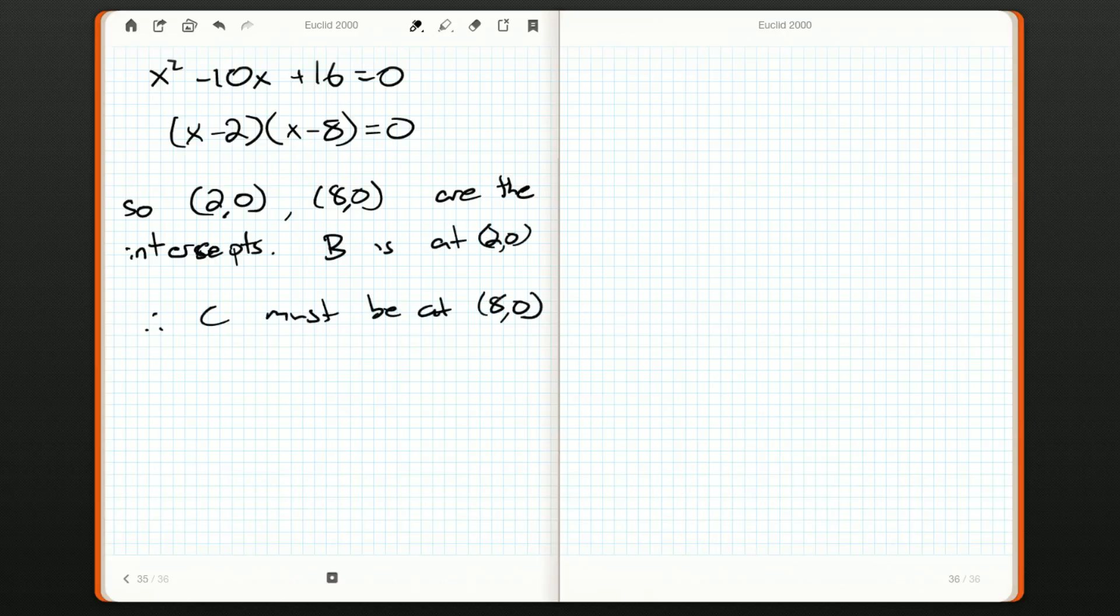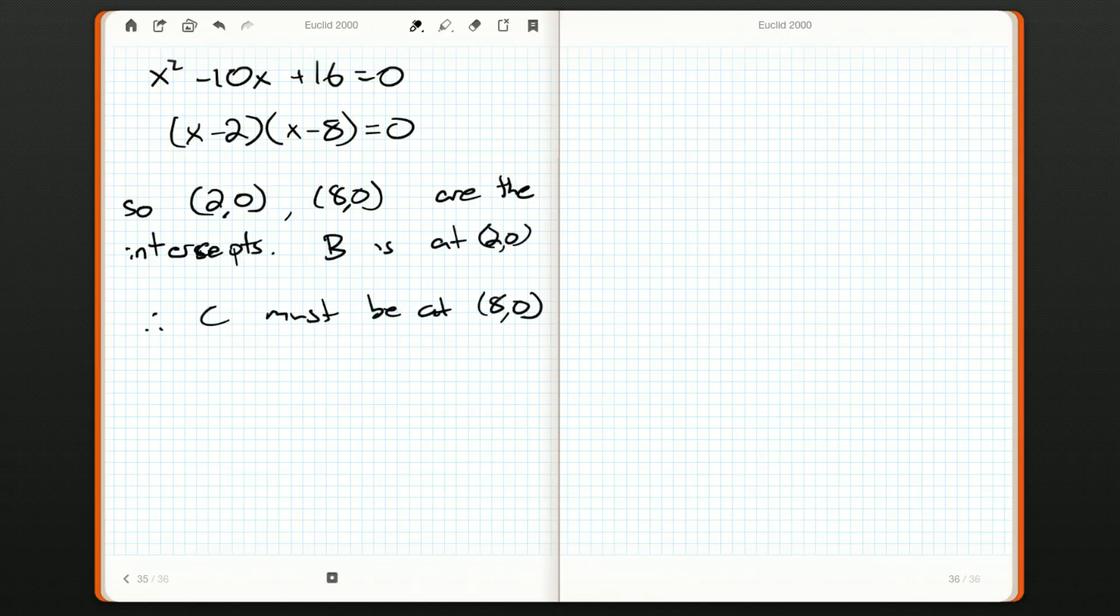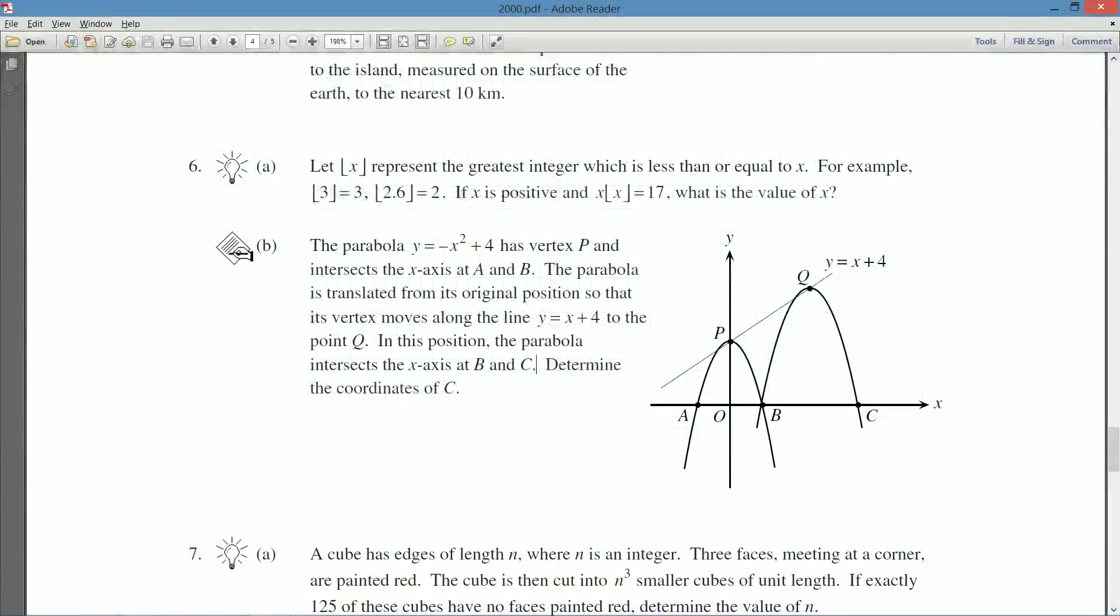And I think that's all we were asked for, is what are the coordinates of C? Determine the coordinates of C. Well, we got them. We figured out the coordinates of A and B. We created some coordinates for Q in terms of a variable. And we used the location of B to help us solve for that q. That gave us the equation for this parabola. And at that point, it was a simple matter of finding the x intercepts.